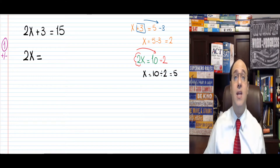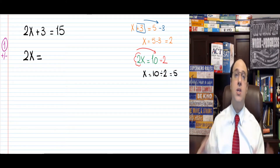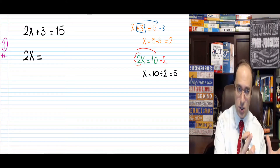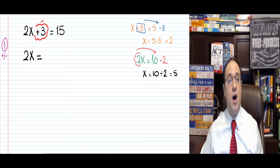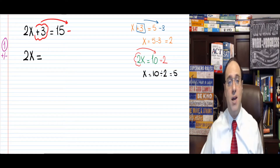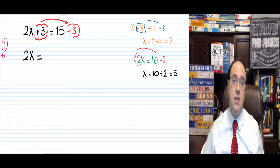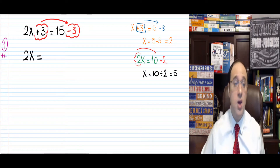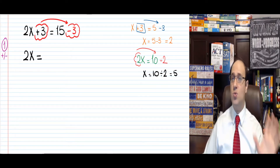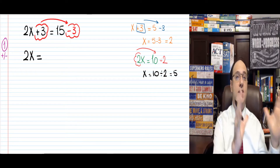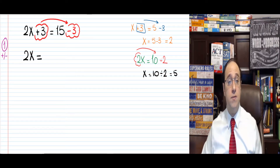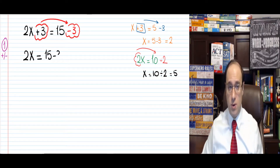We want to get rid of anything that is plus or minus the x, so we want to get rid of the plus 3. Plus 3 goes to the other side of the equal sign as minus 3, giving us 15 minus 3. So we rewrite this as 2x — I didn't touch the 2, so 2x is just as it is — equals 15 minus 3.